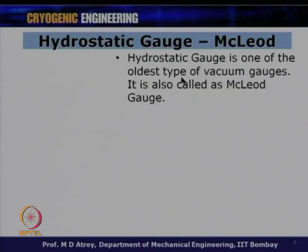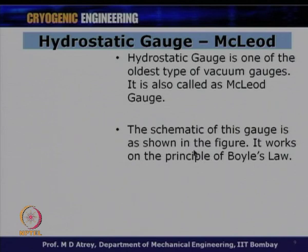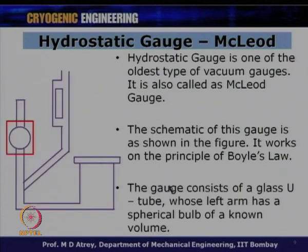The hydrostatic gauge is one of the oldest types of vacuum gauges, also called the McLeod gauge. It works on the principle of Boyle's law: PV = constant, or P₁V₁ = P₂V₂ at constant temperature. The schematic shows how the McLeod gauge works, and we will understand the principle on which this gauge operates.